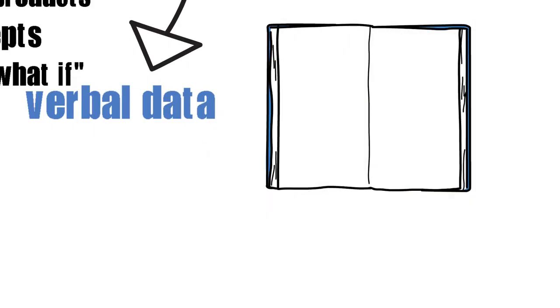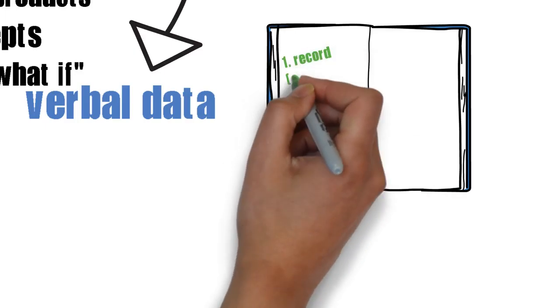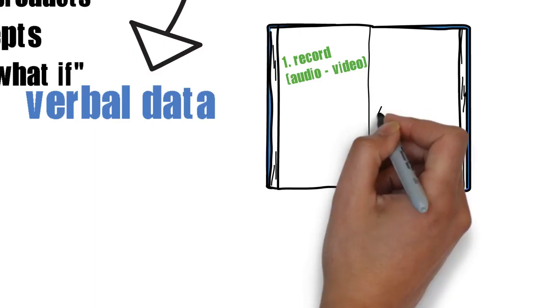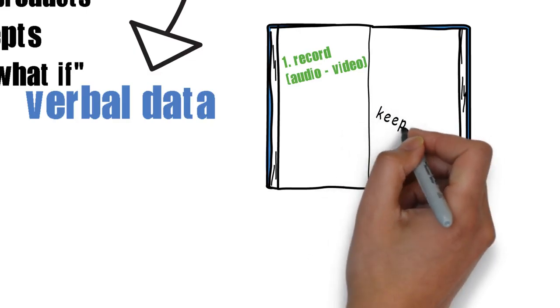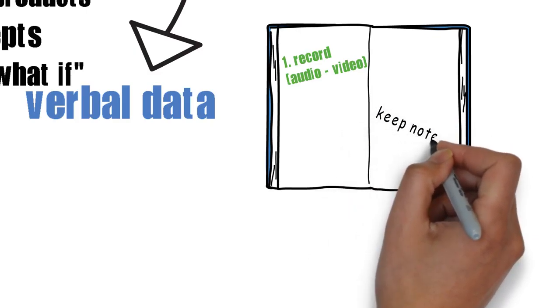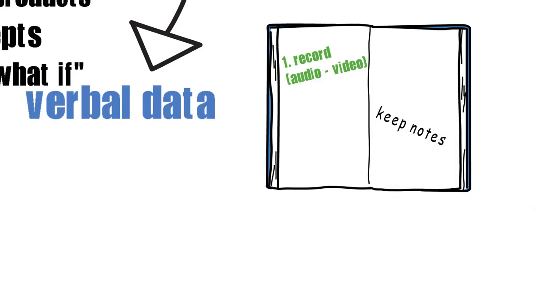The data you will collect by running a focus group are mostly verbal information, and it will be useful to record them either through video or audio so that you can go back and revisit what was said. You will probably need this for the analysis, especially if you're running the session alone. Also, if possible, ask someone else—a friend, a co-worker, or an employee—to be present and either moderate the discussion or keep notes throughout the focus group.